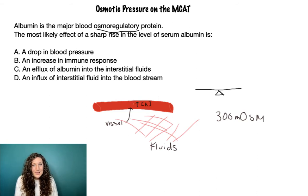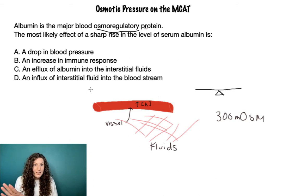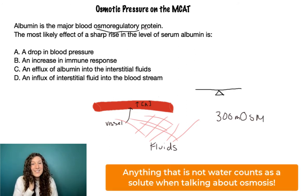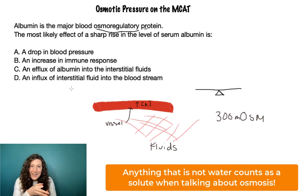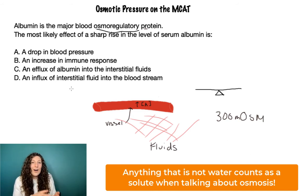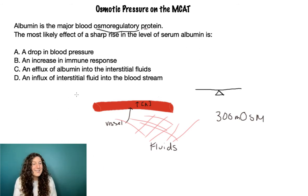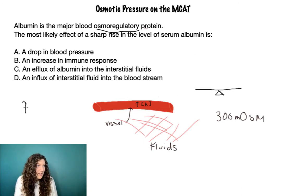Albumin is a protein. When we're talking about the ratio of solutes to fluid in osmosis, anything that's not water is usually a solute — that includes proteins, ions, carbohydrates like sugars, glucose, even fats. Anything that's not water counts as a solute. So albumin counts as a solute, and we've increased the solute concentration of the compartment that is the blood vessel.